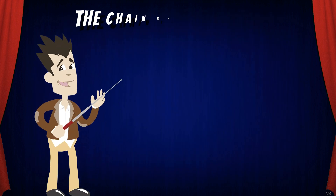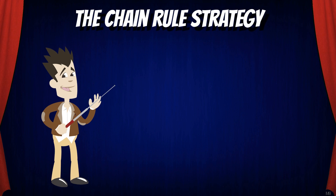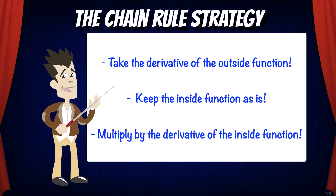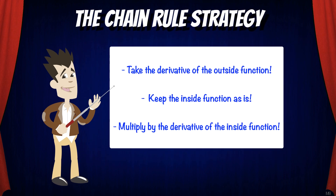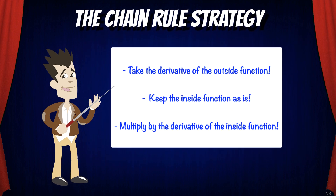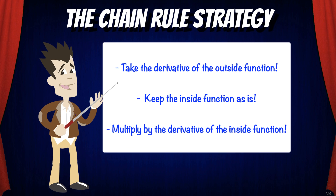Here's a general strategy for the chain rule: take the derivative of the outside function, but keep the inside function as is. Then multiply by the derivative of the inside function.